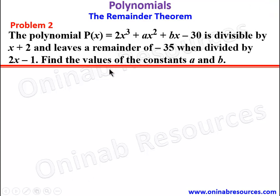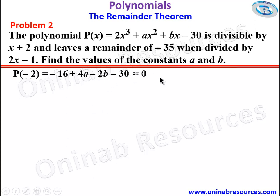So p of negative 2 equals negative 16 plus 4a minus 2b minus 30 equals 0. Simplifying: 4a minus 2b equals 46, since negative 16 minus 30 gives negative 46, and taking it to the other side gives 46. We call this equation 1.